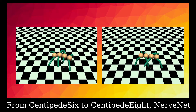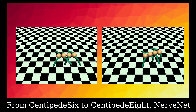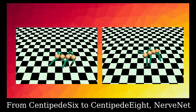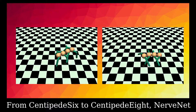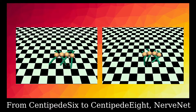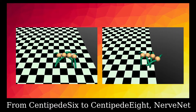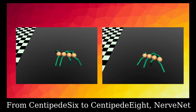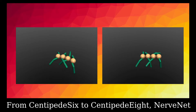In NerveNet, to make use of structure information and produce transferable policies on new agents, a graph neural network is used where each body part communicates with its neighbors using message passing. Without any fine-tuning, the agents are able to control eight legs by using the old knowledge of controlling six legs.